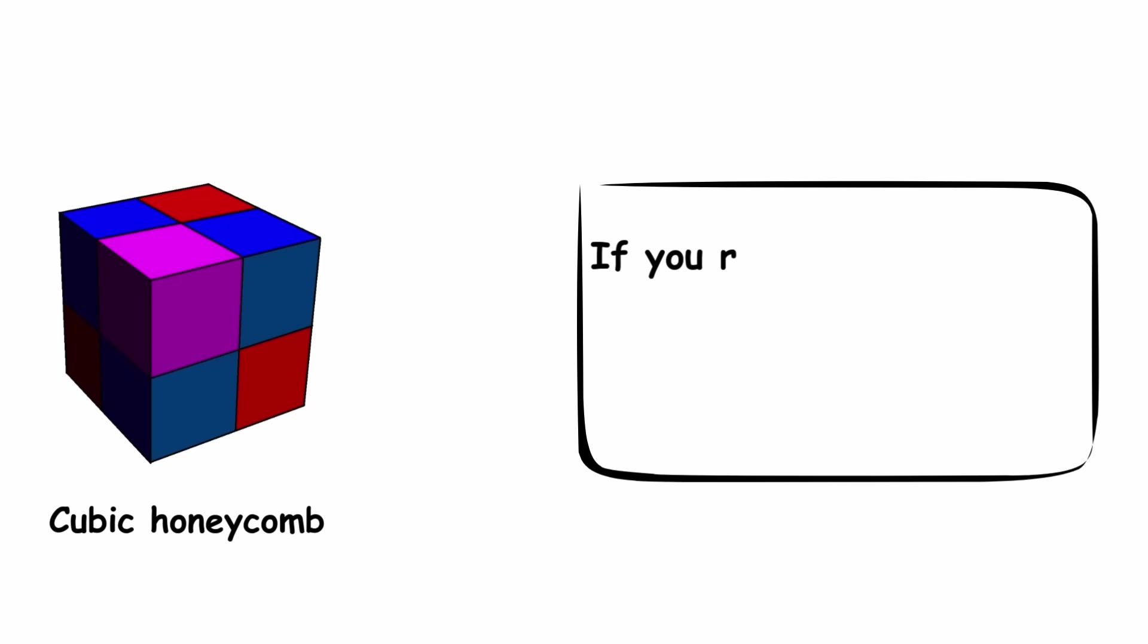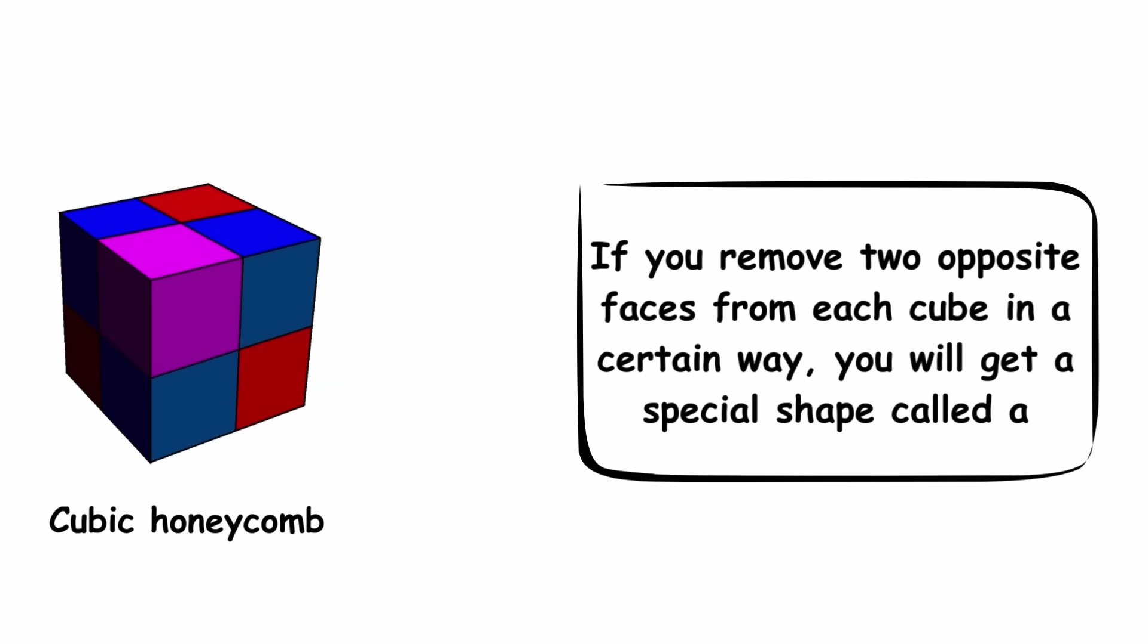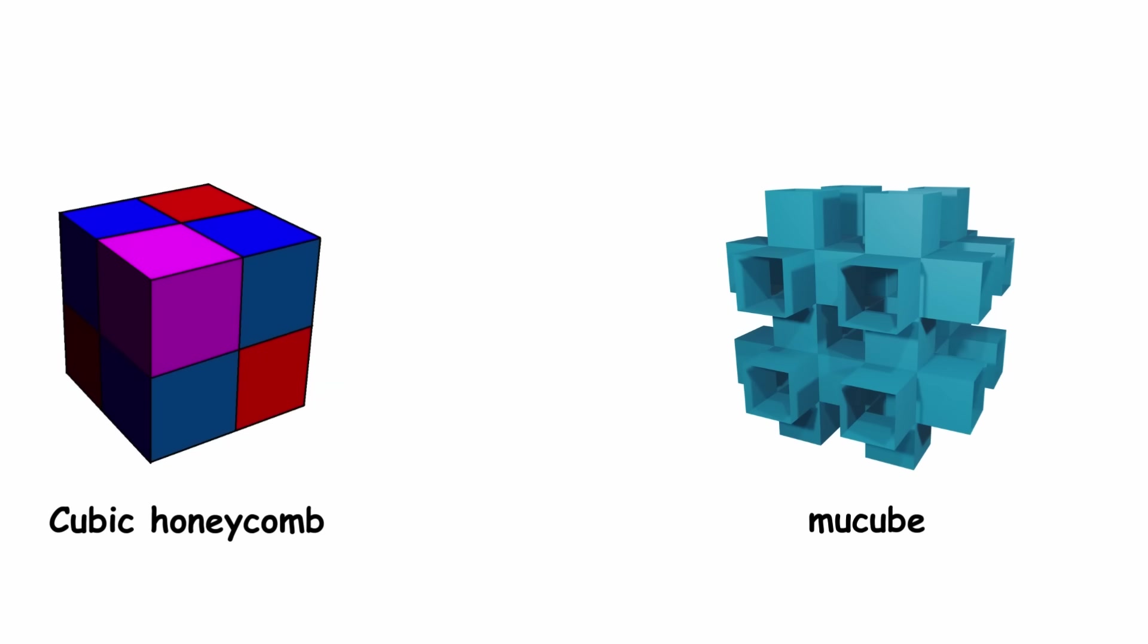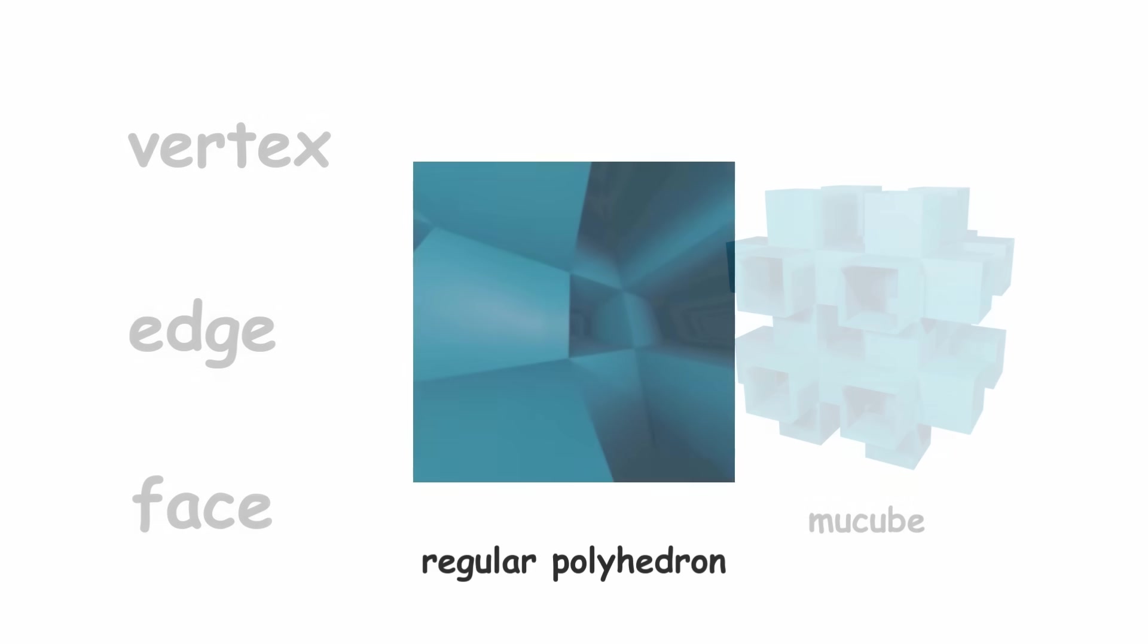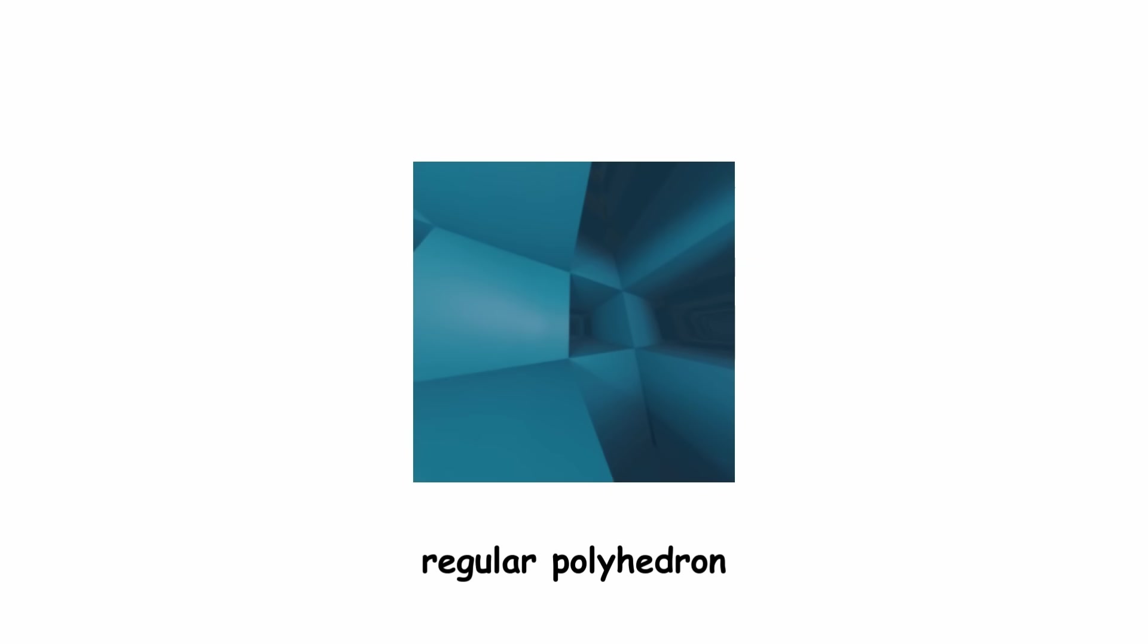Now, imagine an infinite grid of cubes, known as a cubic honeycomb. If you remove two opposite faces from each cube in a certain way, you will get a special shape called a mu cube, short for multiple cube. Any vertex, edge, or face of the mu cube can be moved to any other while keeping it the same. So it is a regular polyhedron. Specifically, a regular skew apirahedron.